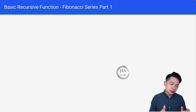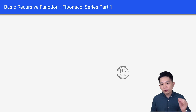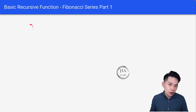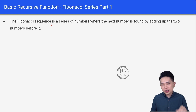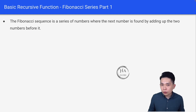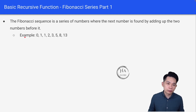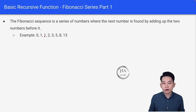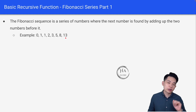Now let's look at one basic recursive function, which is the Fibonacci series. The Fibonacci sequence is a series of numbers where the next number is found by adding up the two numbers before it. For example: 0, 1 — then 1 plus 0 is equal to 1, and then 1 plus 1 is equal to 2, and so on. This is the Fibonacci sequence.